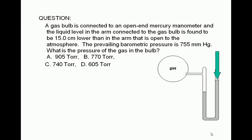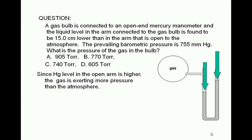Now the mercury on the left arm is being pushed down by the gas. Since the mercury level in the open arm is higher, the gas must be exerting more pressure on the mercury in the left arm.